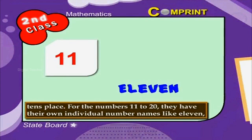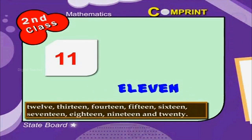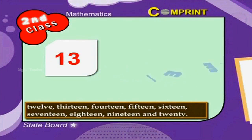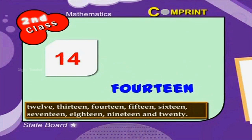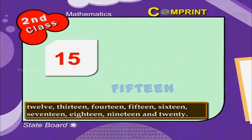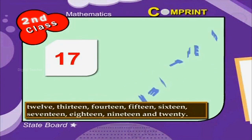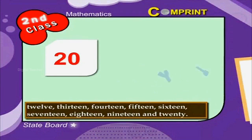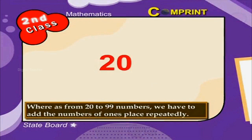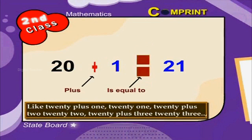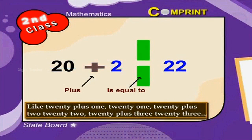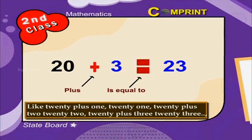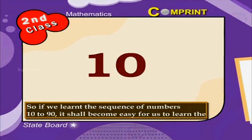For numbers 11 to 20, they have their own individual number names: 11, 12, 13, 14, 15, 16, 17, 18, 19, and 20. Whereas from 20 to 99, we add the numbers of ones place repeatedly — like 20 plus 1 is 21, 20 plus 2 is 22, 20 plus 3 is 23, and so on.